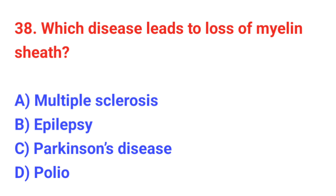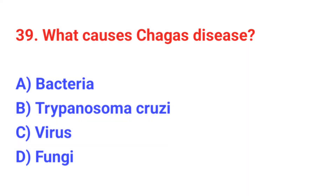Question number 38: Which disease leads to loss of myelin sheath? The correct answer is A: Multiple sclerosis. Question number 39: What causes Chagas disease? The correct answer is B: Trypanosoma cruzi.